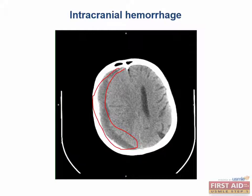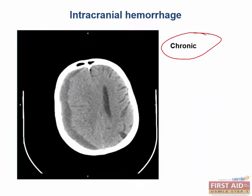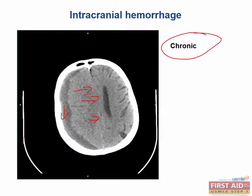Acute subdurals are hyperintense when compared to brain tissue, but chronic subdurals can be either isointense or hypointense depending on the stage of blood. So in this image, we are viewing a chronic lesion because it is hypointense. There is generally a midline shift due to the mass effect of blood pushing everything to the other side. But in contrast to epidurals, subdurals cannot cross the falx or tentorium.